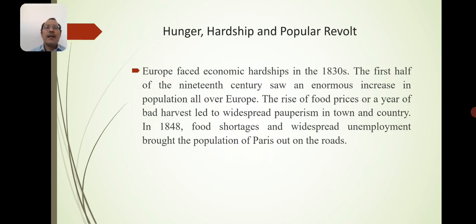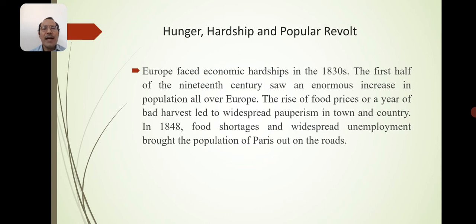Hunger, hardship, and popular revolt — the revolution of the liberals: Europe faced economic hardship in the 1830s. The first half of the 19th century saw an enormous increase in population all over Europe. The rise of food prices or a year of bad harvest led to widespread poverty in town and country. In 1848, food shortages and widespread unemployment brought the population of Paris out on the roads.